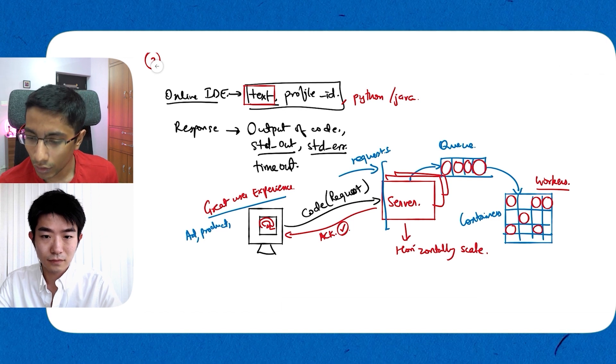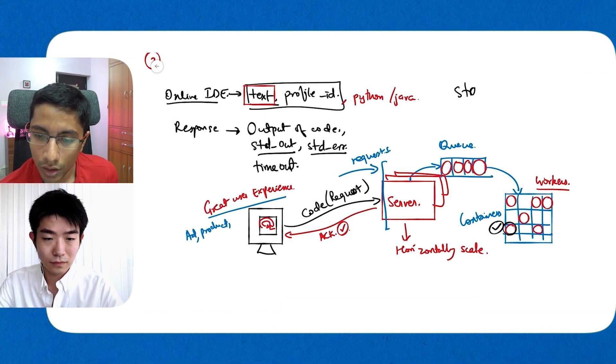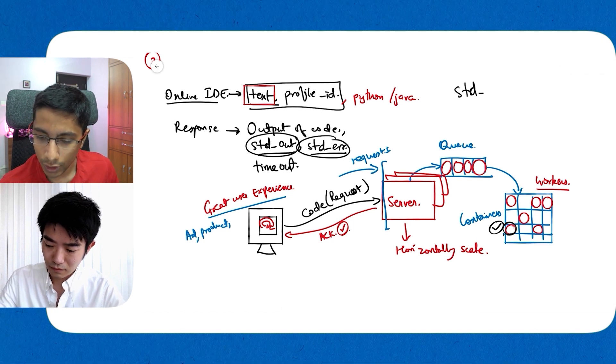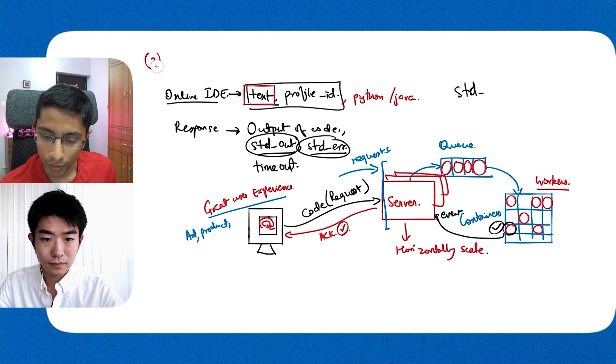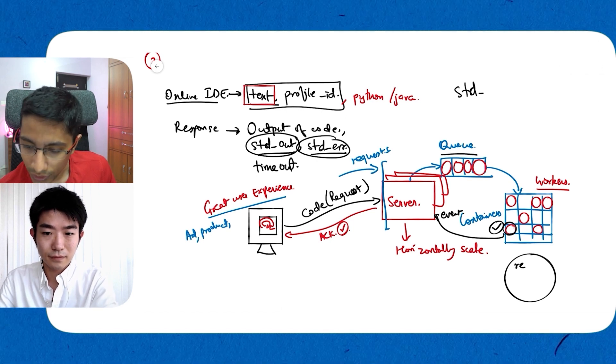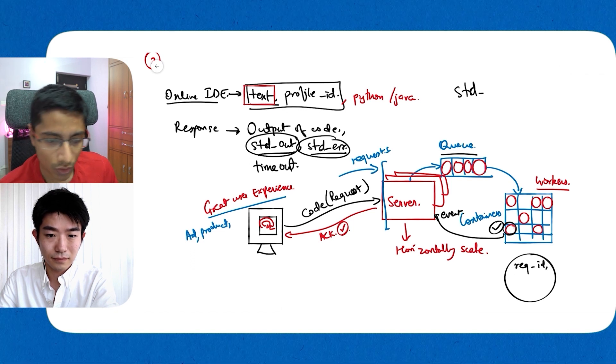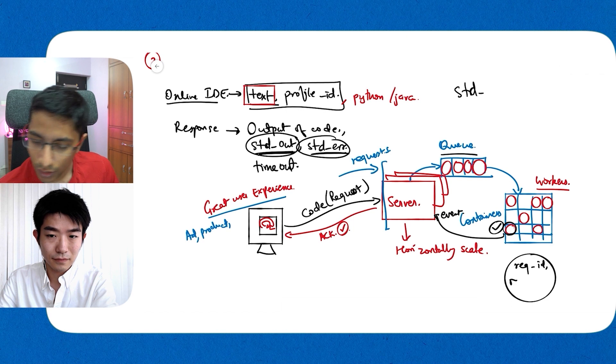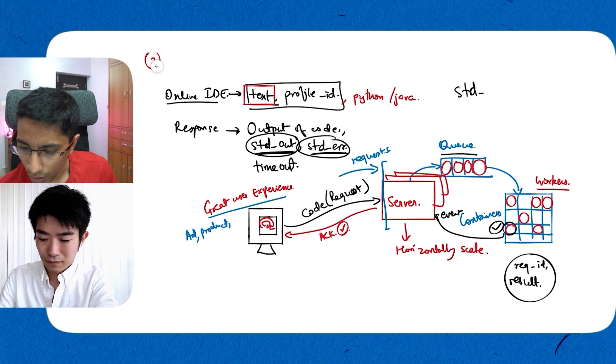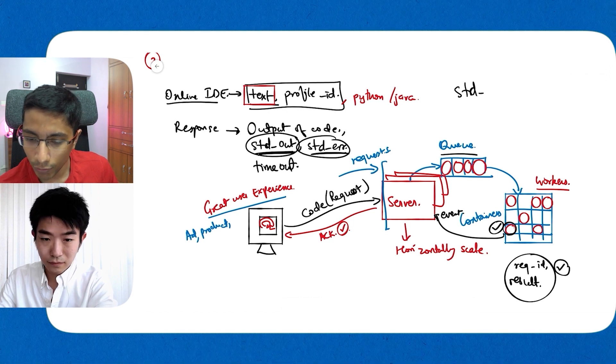Apart from that, once we have the computation result calculated, which is the standard out and the standard error, we take this send it back as a response to our server as an event. This event has details like for this request id, this was the response. So these two details, response, or I shouldn't call it response, I should probably call it result. So request id result gives us the final result of this request.